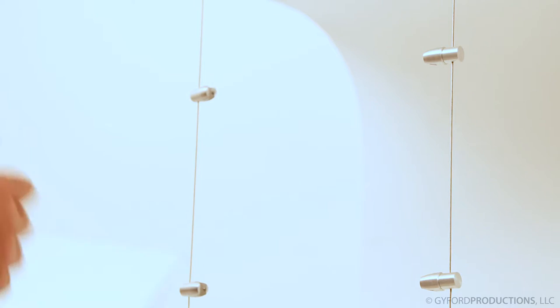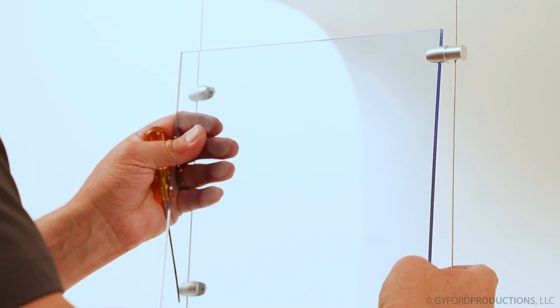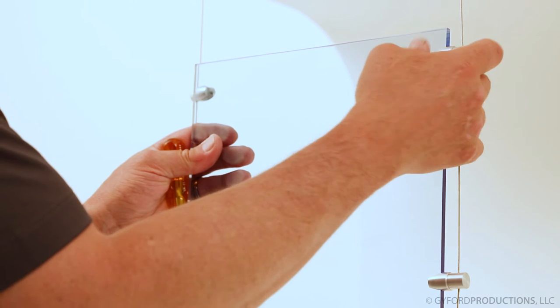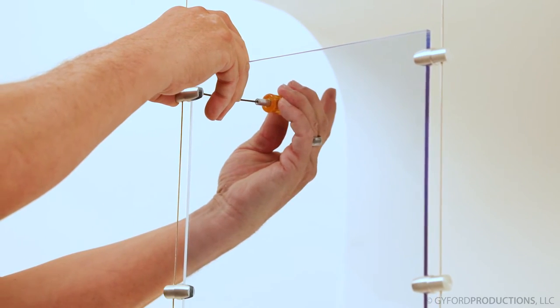You can attach grippers to your material first if it's convenient. Here, we'll slide the panel in place, make final adjustments, and then tighten everything up.